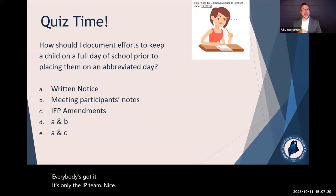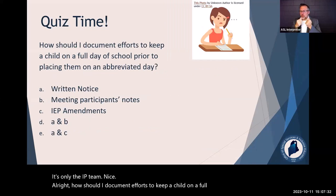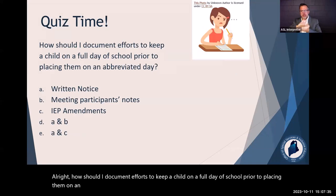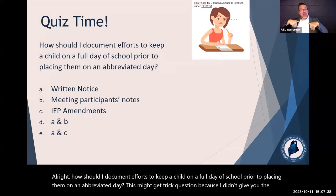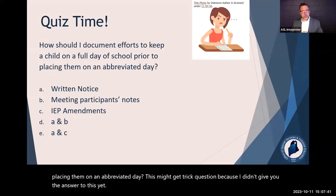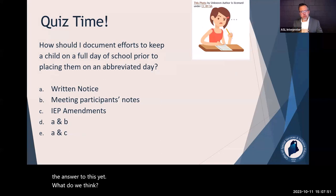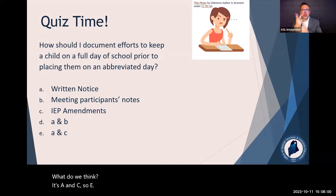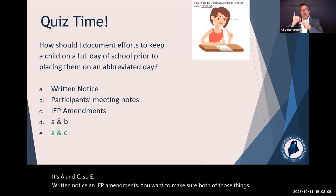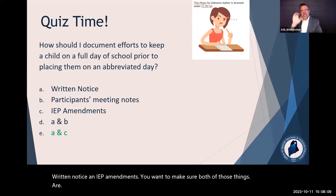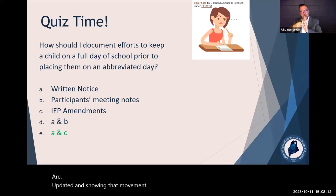How should you document efforts to keep a child on a full day of school prior to placing them on an abbreviated day? The answer is A and C — so E: written notice and IEP amendments. You want to make sure both of those things are updated and showing that movement and the supports that you're providing.